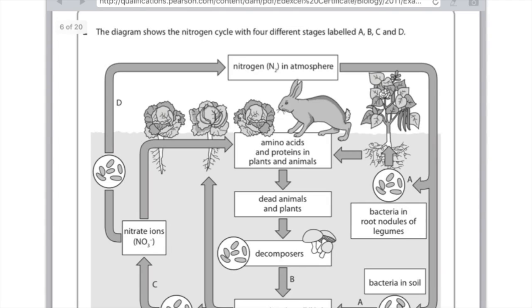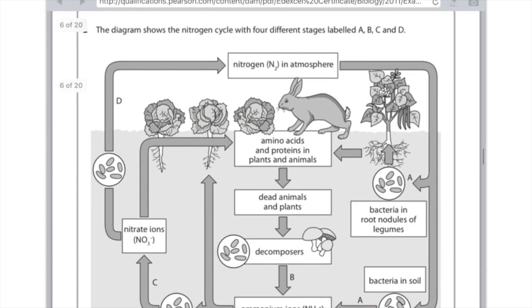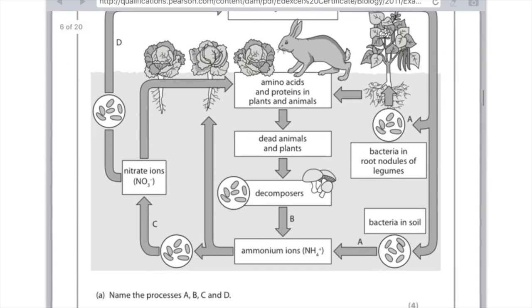So let's look at some nitrogen cycle questions starting with this one. The diagram shows the nitrogen cycle with four different stages labelled A, B, C and D. Don't let yourself panic when you see these diagrams. You need to focus in on this specific part of the diagram rather than freaking out by looking at the whole thing. Name the processes A, B, C and D.